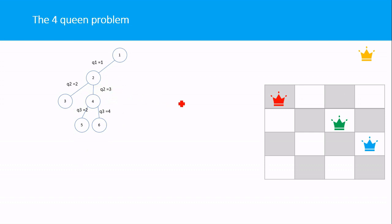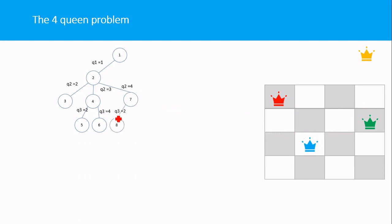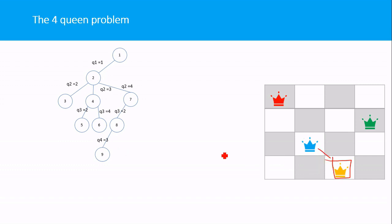We now place Q2 in column 4 (Q2 = 4). We then place Q3 in column 2 — it is not in the line of attack of any other queen, so Q3 = 2 is valid. Now placing Q4: column 1 is taken by Q1, column 2 by Q3, and column 4 by Q2, so the only available position for Q4 is column 3.